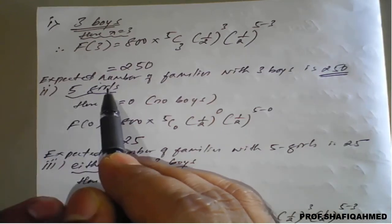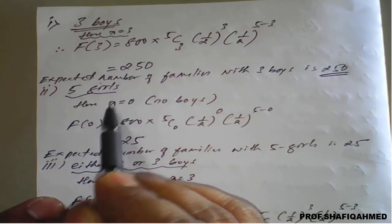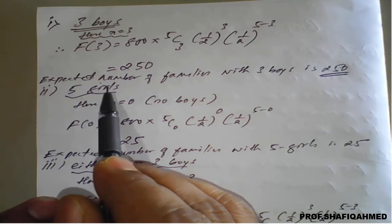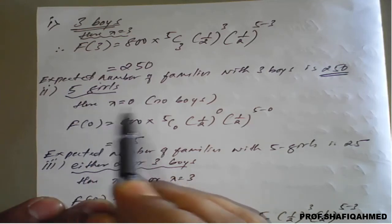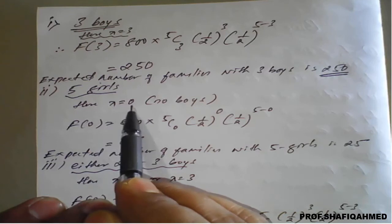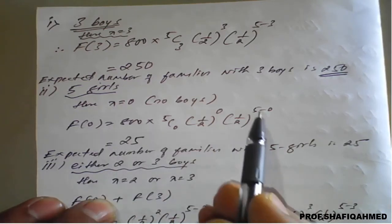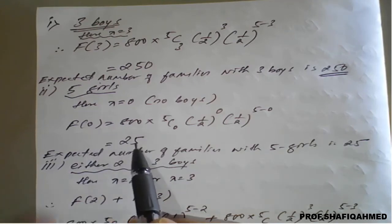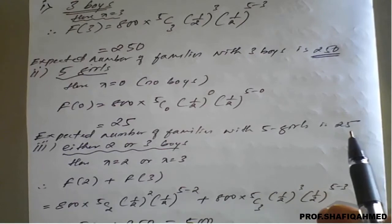For the second part — 5 girls — remember x was taken as the number of boys. Out of 5 children, if there are 5 girls only, then there are no boys, meaning x = 0. Replacing x = 0 in the expression, we get 25. Therefore, the expected number of families with 5 girls out of 800 is 25.